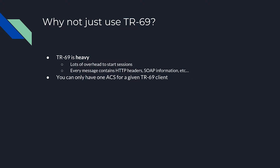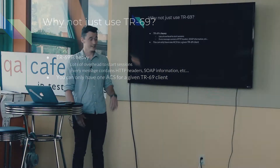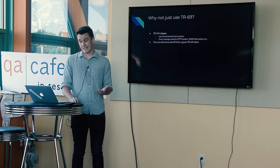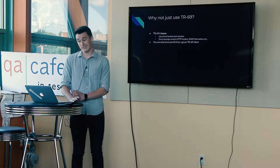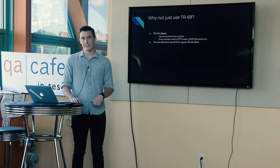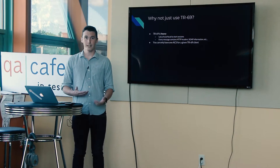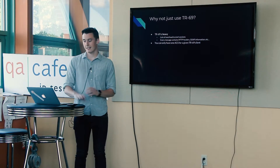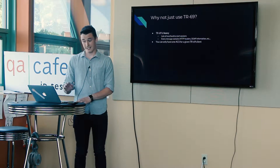In this new IoT world, the heaviness of a protocol is really important. If you have 15 smart things in your house, you're going to have a really noisy network. TR69 is heavy — there's a lot of overhead to start a session, and every message contains a lot of headers and SOAP information that really isn't needed. Plus, in the TR69 world, you really only have one ACS controlling a bunch of agents, whereas in USP that is not necessarily the case.